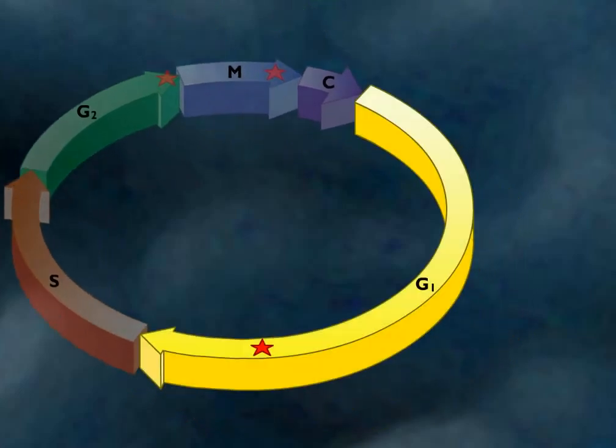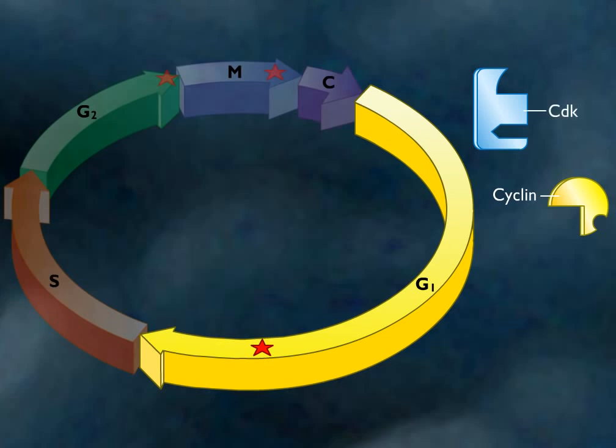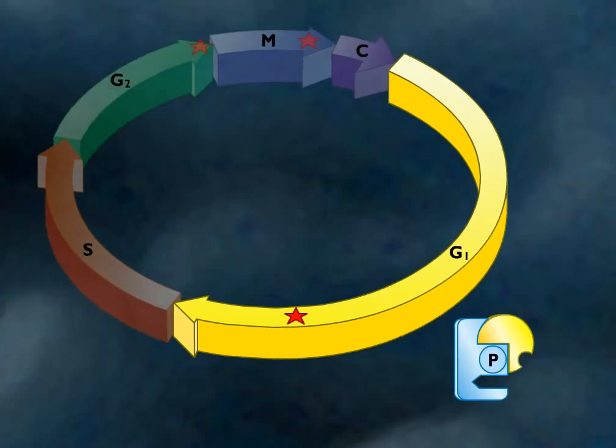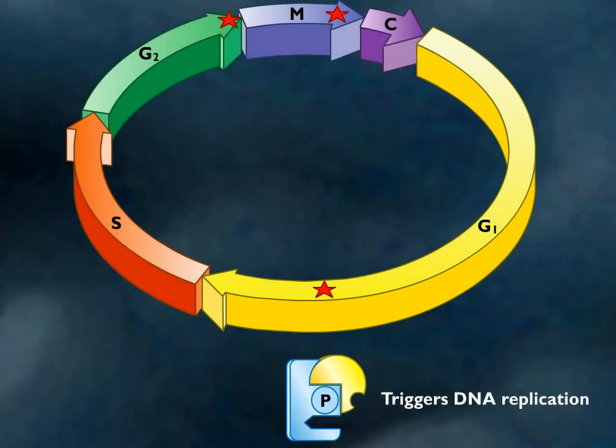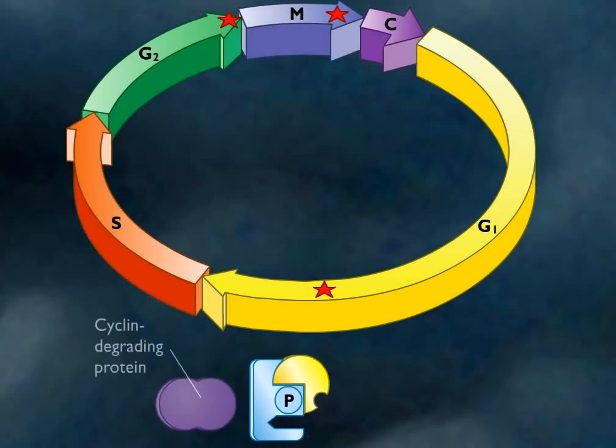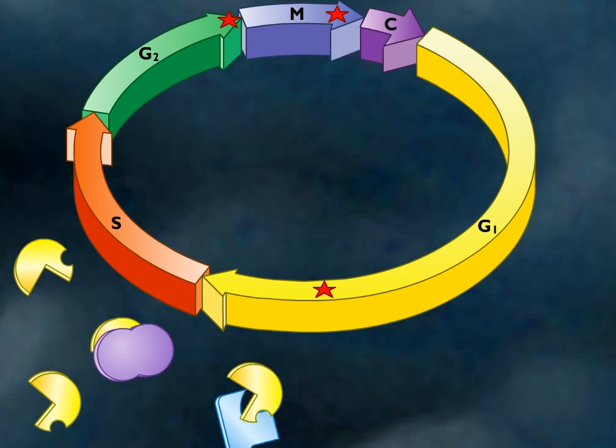The G1 checkpoint is thought to be regulated in a similar fashion. The level of G1 cyclin increases and associates with cyclin-dependent kinase, CDK. Eventually, a threshold ratio that triggers the next round of DNA replication is reached. The cyclin is degraded and the cycle begins again.